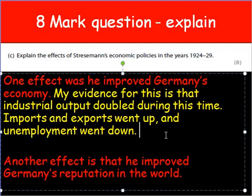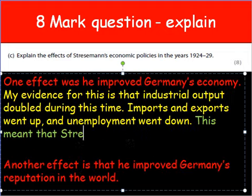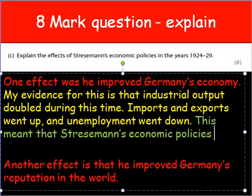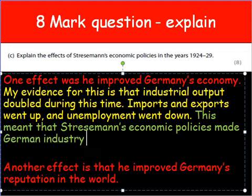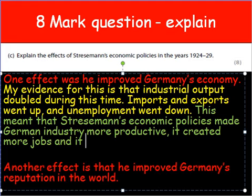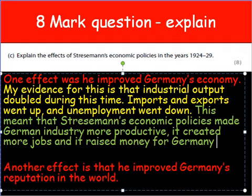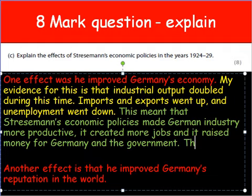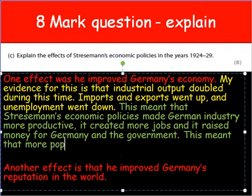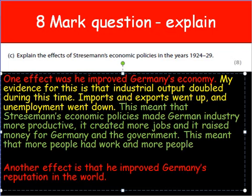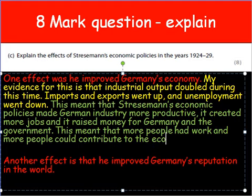Explain the effects. So this meant that Stresemann's economic policies made German industry more productive — they made more things. It created more jobs and it raised money for Germany and the government. This meant that more people had work and more people could contribute to the economy. You'll notice that my evidence is very small compared to my explanation. An explanation is what I've really developed here, which I've just thought of on the spot — I haven't brought any new evidence in; I've just explained what I already have.